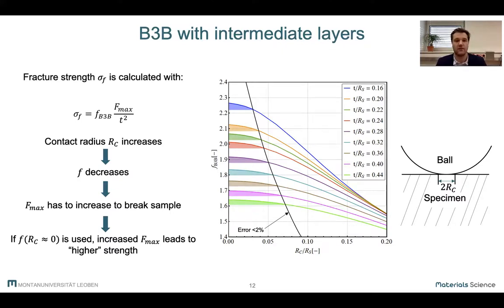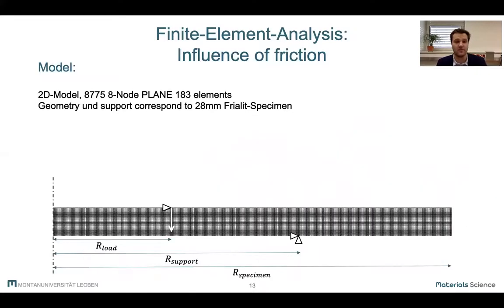So now we have to explain the low strength of ring-on-ring samples without any layers. As I mentioned before, these layers should reduce friction between sample and loading fixture. So our first intention was that friction, which should now be increased due to none of the layers being present, lowers the measured strength. To validate this idea, we used a 2D finite element model in ANSYS, which corresponds to the 28 millimeter samples where we first saw this effect.